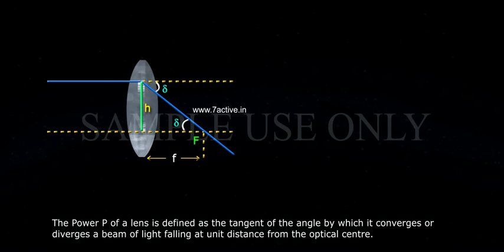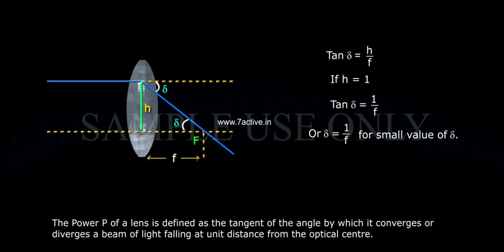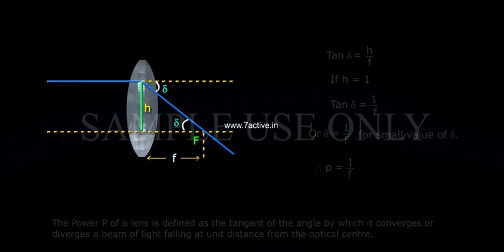The power P of a lens is defined as the tangent of the angle by which it converges or diverges a beam of light falling at unit distance from the optical center. Tan delta equals to H by F. If H equals to 1, tan delta equals to 1 by F, or delta equals to 1 by F. For small value of delta, therefore P equals to 1 by F.